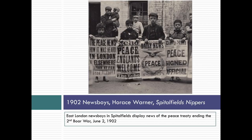In 1902, this is a photograph of what are sometimes called the Spitalfield Nippers — poor, sometimes orphan children in Great Britain. The Spitalfields were in East London, a notoriously poor area. These young orphan kids many times made money only by selling newspapers. Here they are with newspapers showing the end of the Second Boer War in June of 1902.